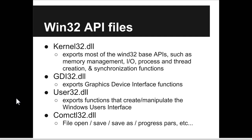The main DLLs most commonly used are kernel32.dll — which is not kernel mode, it's user mode — it exports most of the Win32 base API, predominantly memory management, input-output, process handling, and synchronization. And also user32.dll, which handles exporting functions that create and manipulate the Windows user interface.